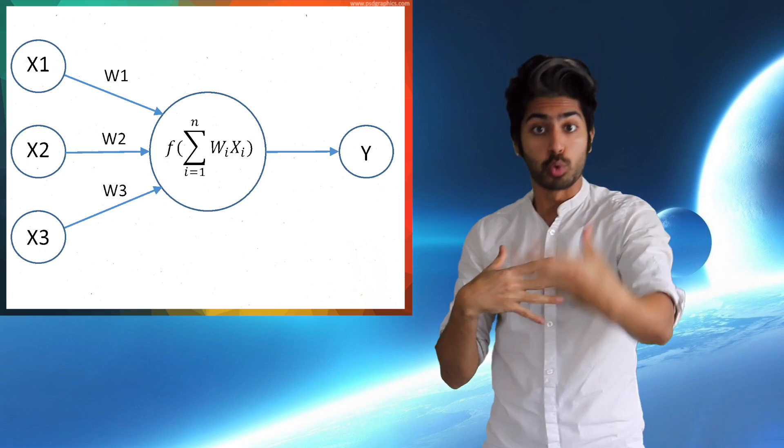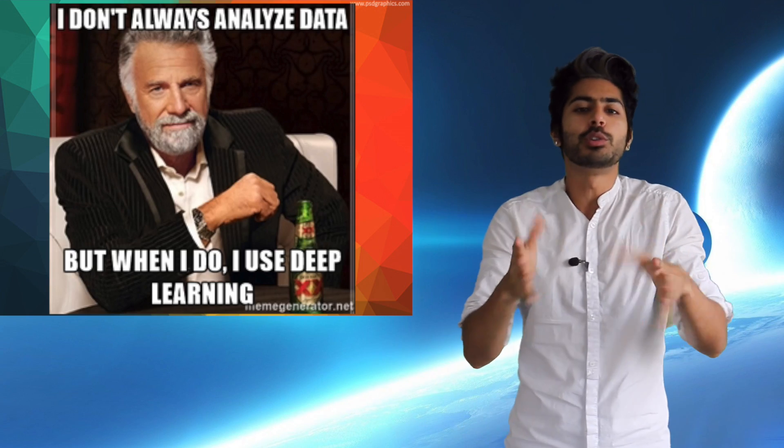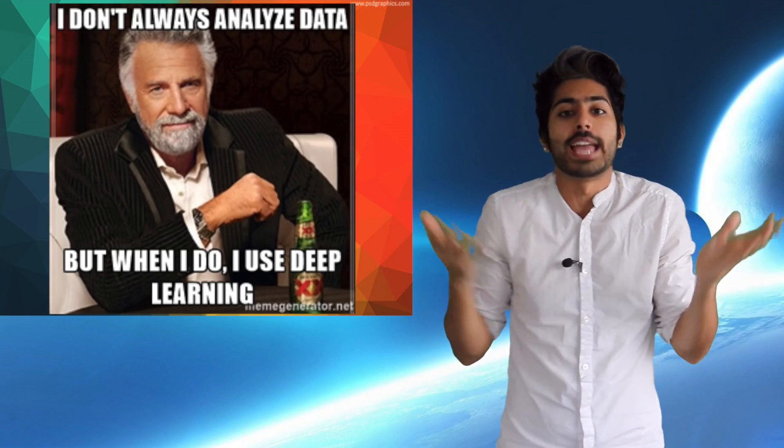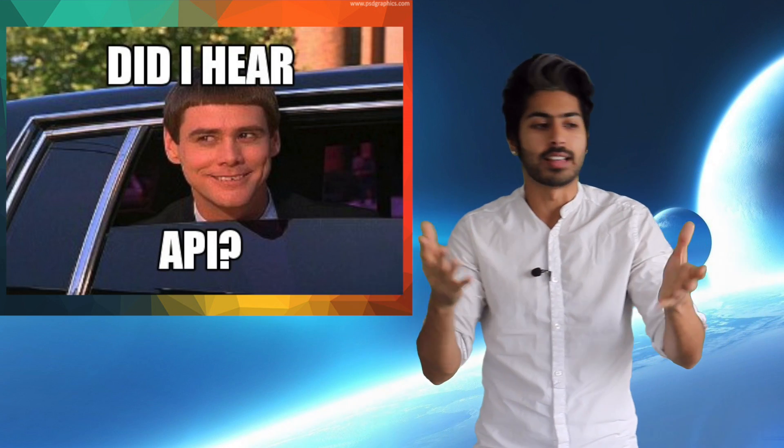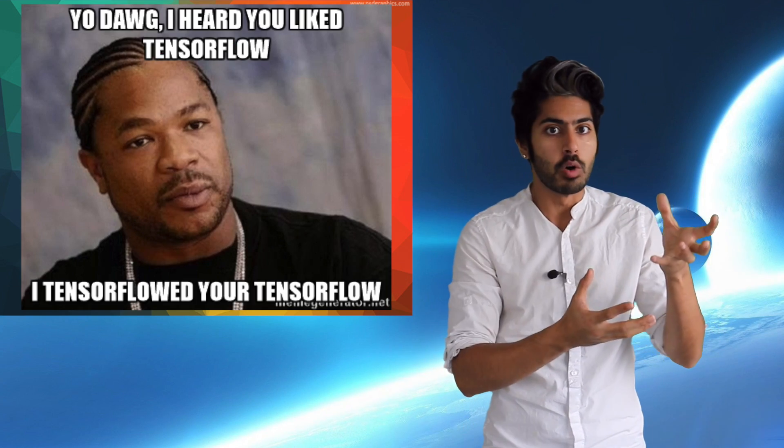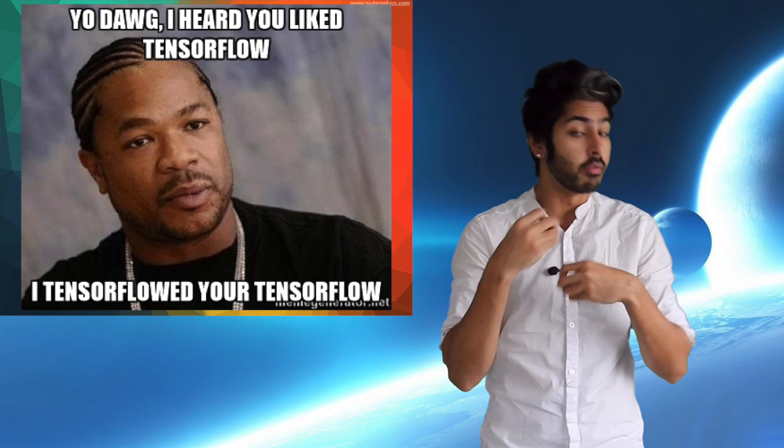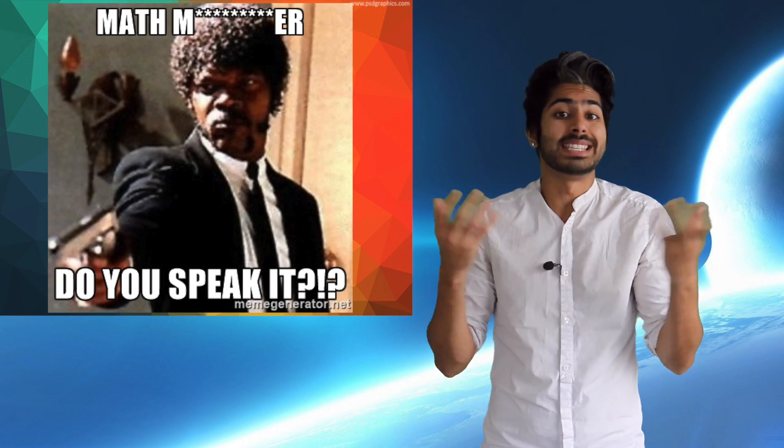Math helps us define rules for our neural network so that we can learn from our data. If you wanted to, you could use deep learning without ever knowing anything about math. There are a bunch of readily available APIs for tasks like computer vision and language translation. But if you want to use a library like TensorFlow to make a custom model to solve a problem, knowing what math terms mean when you see them pop up is helpful. And if you want to advance the field through research, you definitely need to know the math.